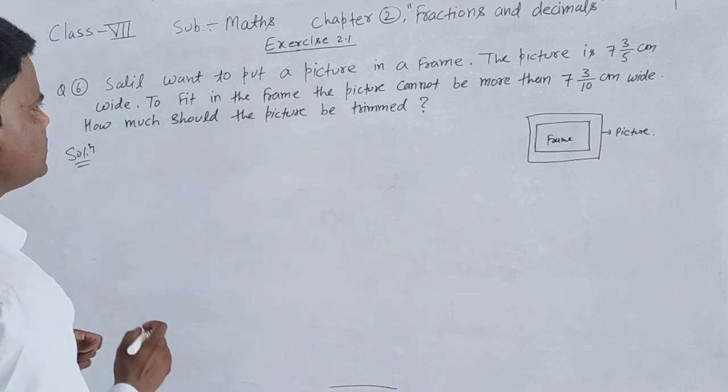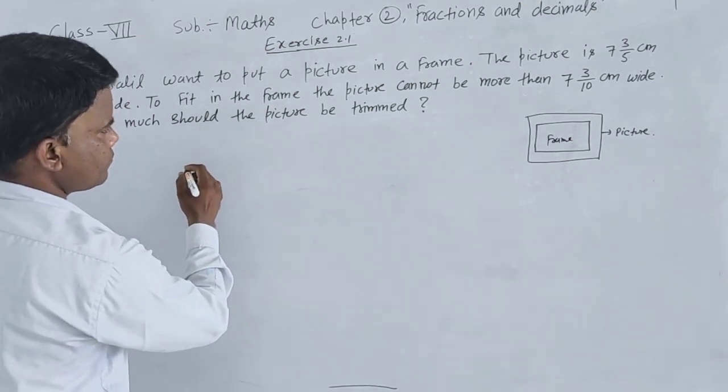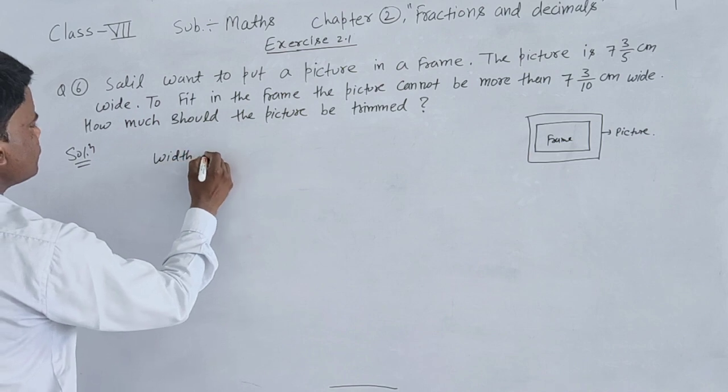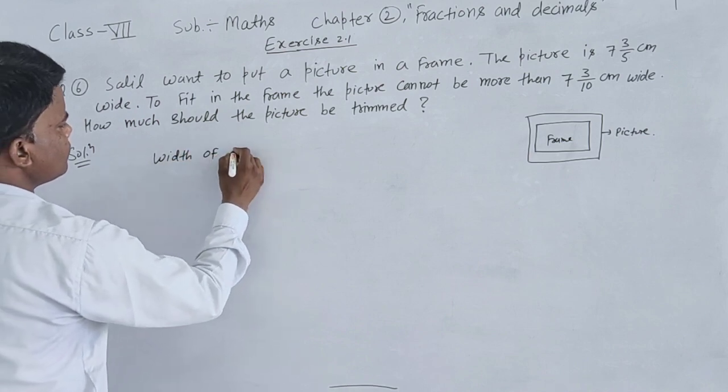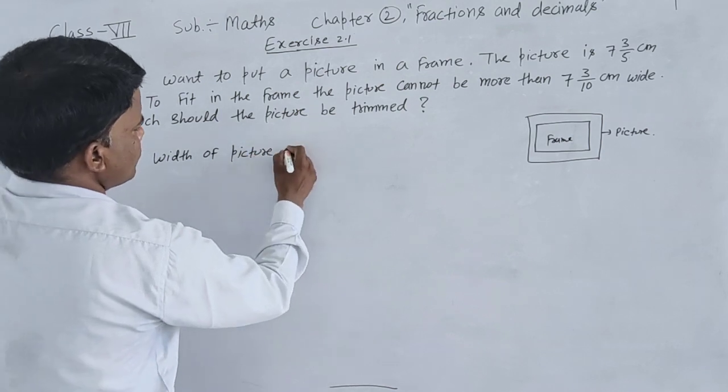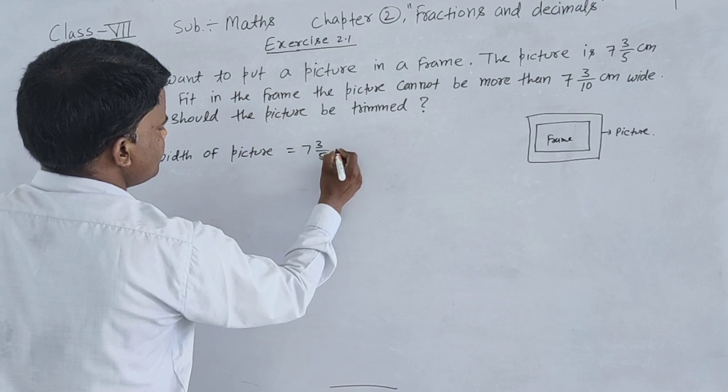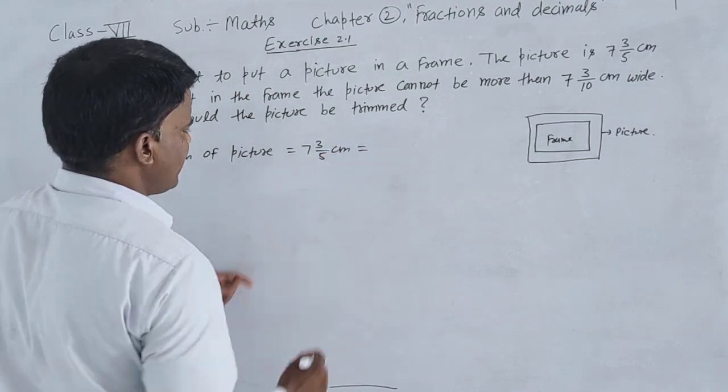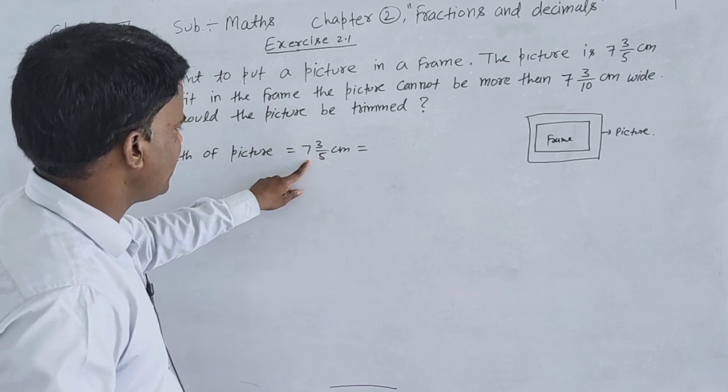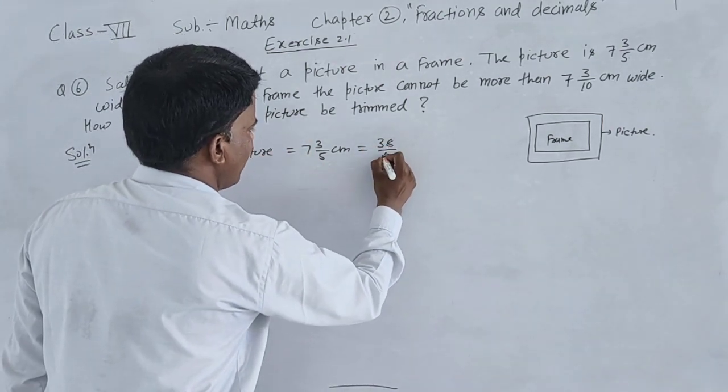The picture is 7 3/5 cm wide. Width of picture: 7 3/5 cm wide. In mixed fraction, this can be converted - 7 times 5 is 35, 35 plus 3 is 38, so 38/5 cm.